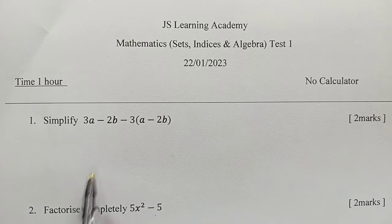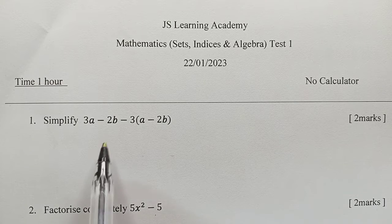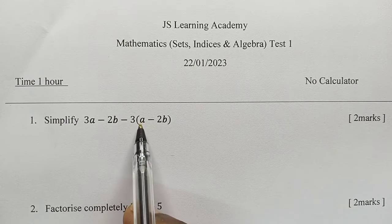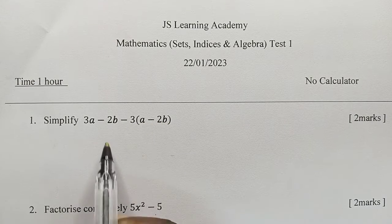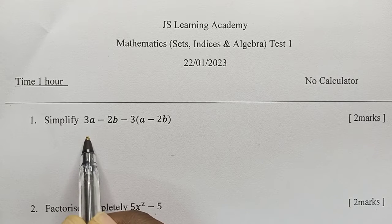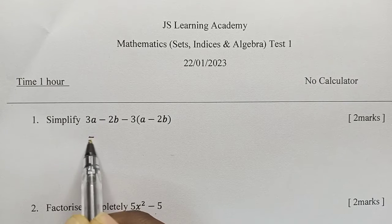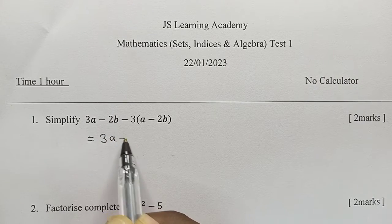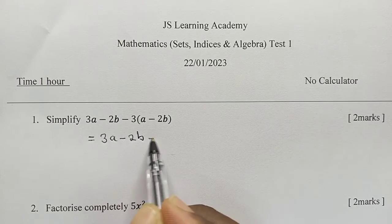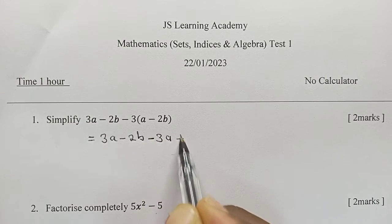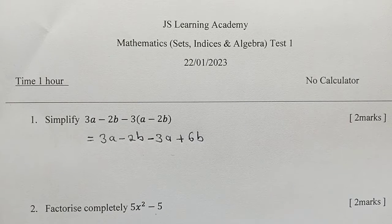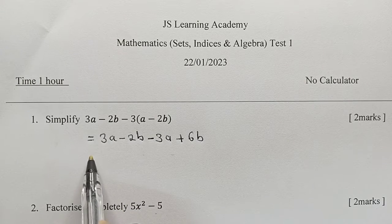The first question says simplify. We need to simplify 3A minus 2B minus 3, open bracket, A minus 2B, closed bracket. The first thing we must do is get rid of the brackets. We are going to say equal to 3A minus 2B minus 3A plus 6B.